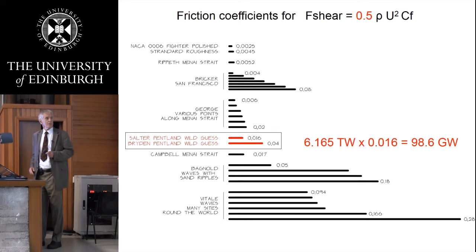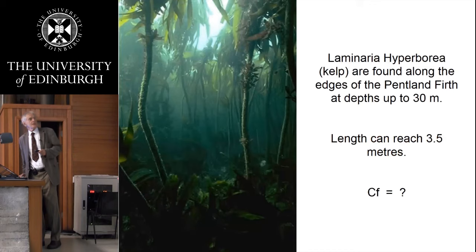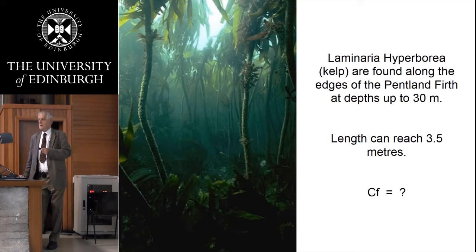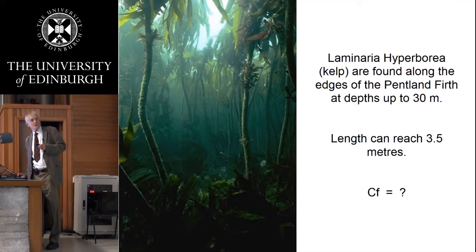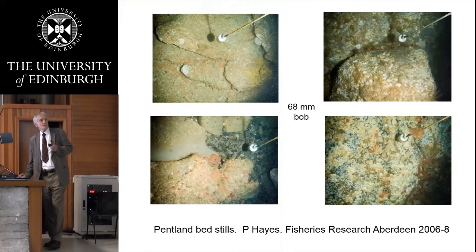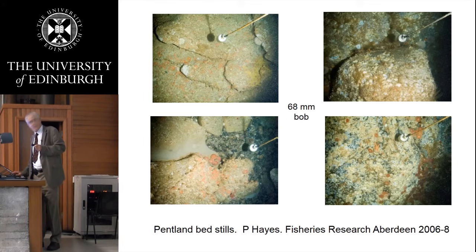Let's try to see what friction coefficients might be. Here is a picture of giant kelp — there's lots of giant kelp growing in the Pentland Firth wherever there's enough light, going down to about 30 metres depth. In very high velocity places they get wrenched out and washed downstream, but they can grow three and a half metres long, which is not indicating a very high drag. I have miles and miles of pictures like this taken by an ROV cruising around the Pentland Firth. The little white thing here is 60 millimetres in diameter, giving a rough scale for the size of the rocks down there.